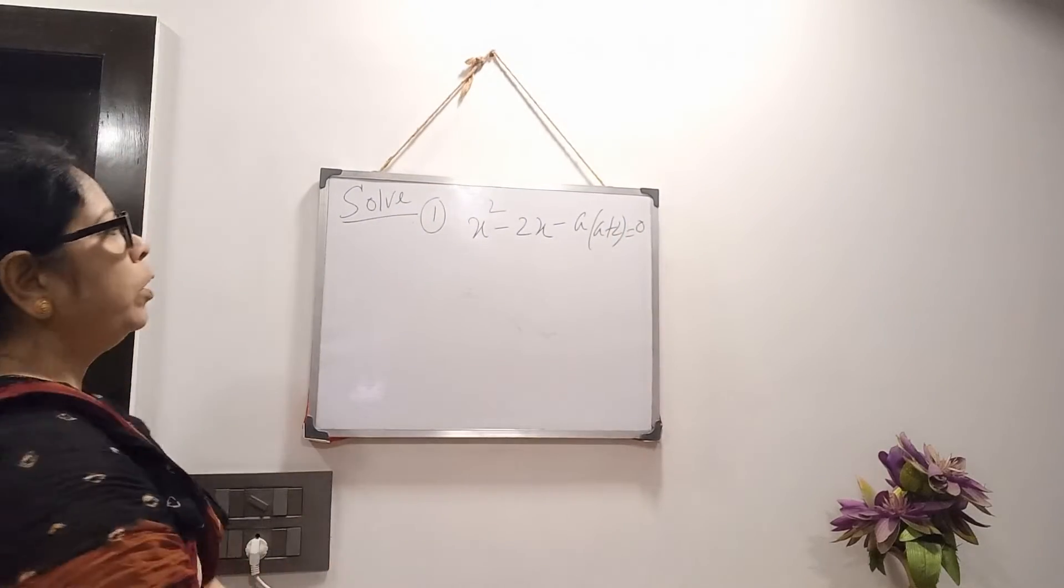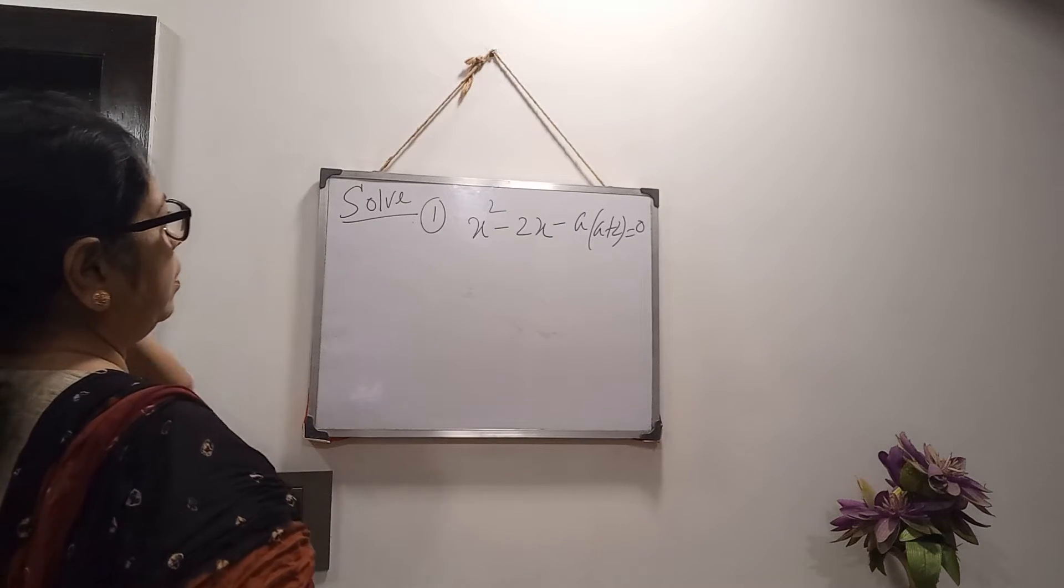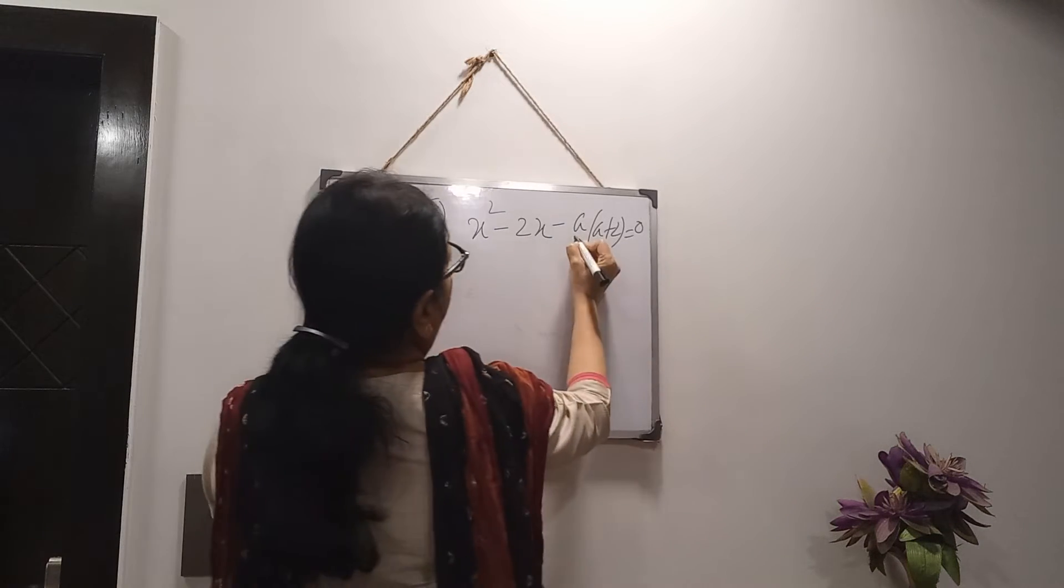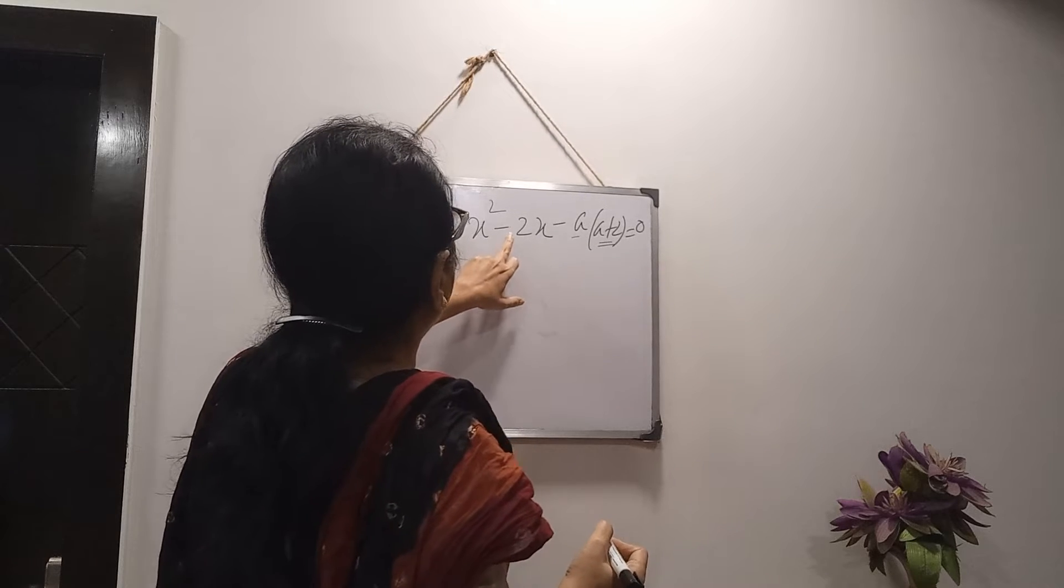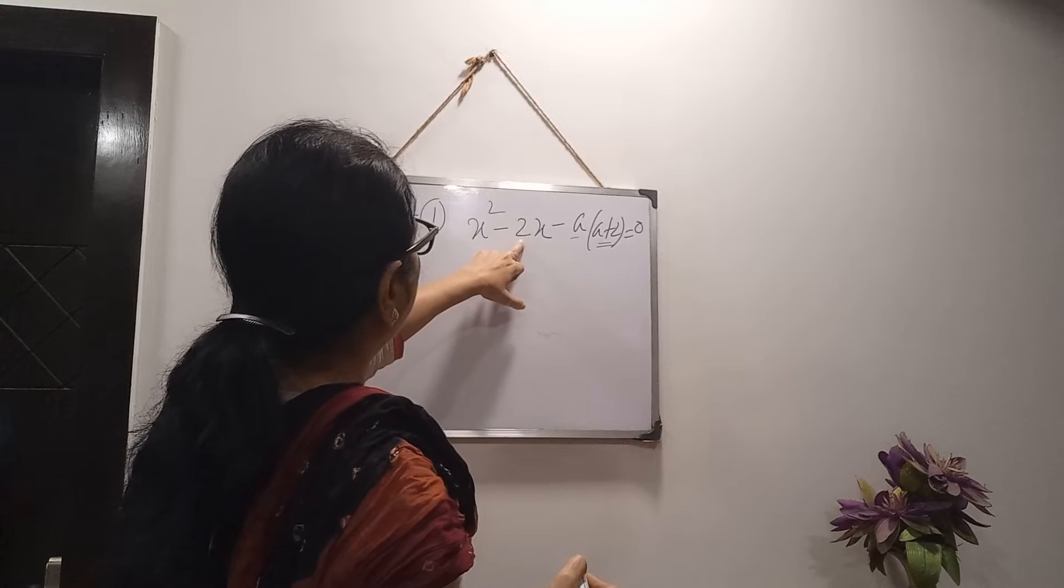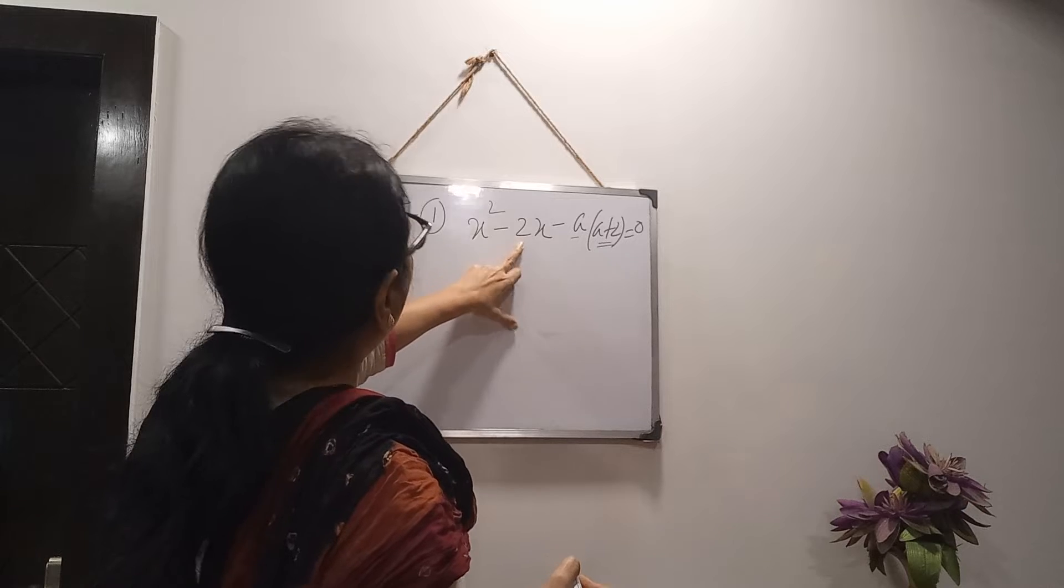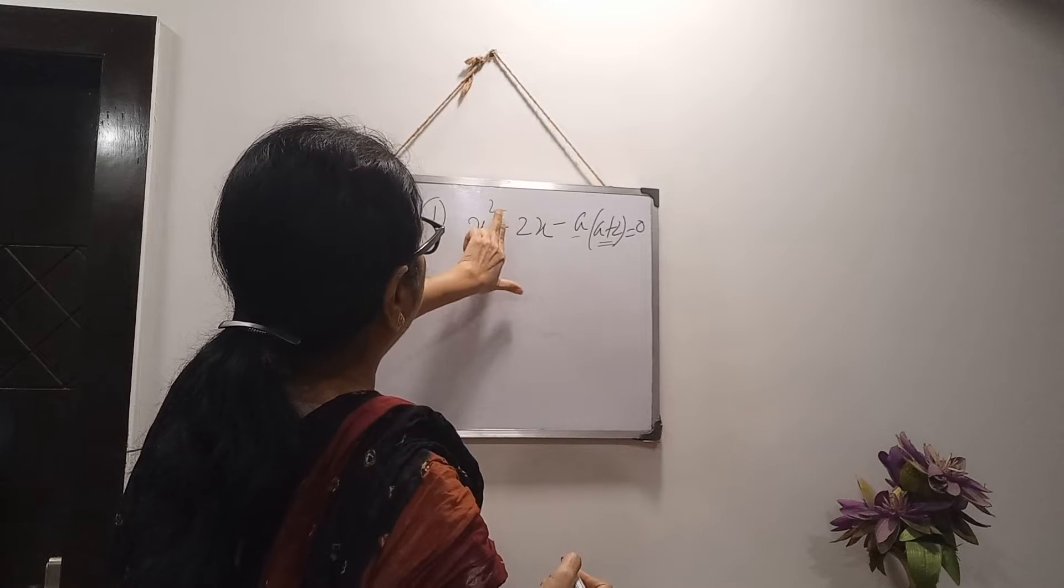Here, what to do? We will do middle term factor. Our factors are a and a plus 2. From here, what to bring? We have to bring minus 2. Or minus, if I will take common, you have to bring plus 2.